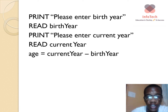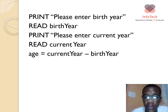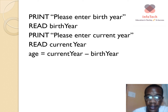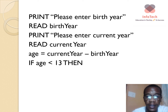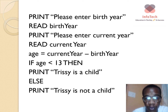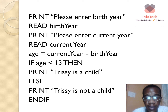To find Tracy's age, we calculate: age equals current year minus birth year. So if the current year is 2020 and Tracy was born in 2000, that gives us 20 years. Then, if age is under 13, we print that Tracy is a child. However, if Tracy's age is over 13, we print that Tracy is not a child. Remember to always include the end if statement.